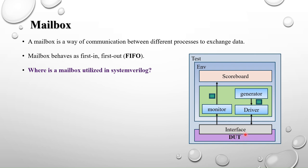After the driver drives the stimulus to the DUT, the DUT will process the data. That processed data is captured by the monitor from the DUT output. The monitor then has to transfer the captured data to the scoreboard to compare the DUT output against the reference output. For that we again use a mailbox — monitor transfers the captured data through the mailbox to the scoreboard. So there are two cases: generator to driver, and monitor to scoreboard.